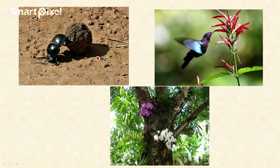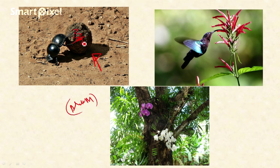For habitat niche, an example is dung beetles. Dung beetles will be present wherever there is dung — they feed on dung, so their habitat is wherever dung is present. This is the habitat niche of dung beetles.